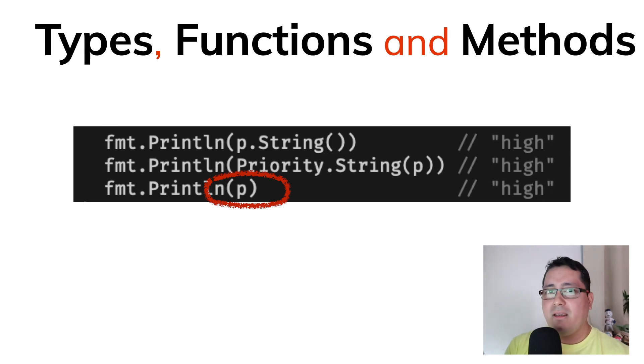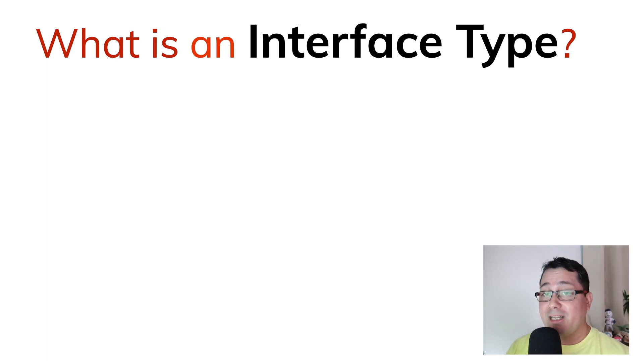So why is it printing out high? This is where interface types comes into place.